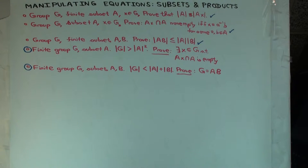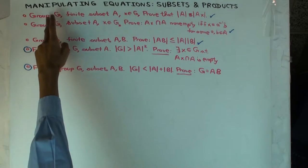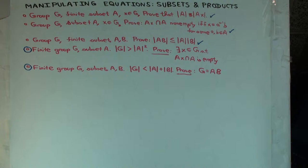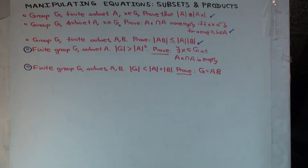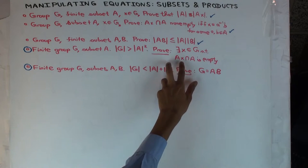This is a continuation of the previous video where we did the first three exercises. Now we're going to the fourth exercise, which is pretty tricky. It says: suppose you have a finite group G and a subset A such that the size of the subset squared is still less than the size of the group. We want to show that there is an element in the group such that A intersect A times this element is empty.